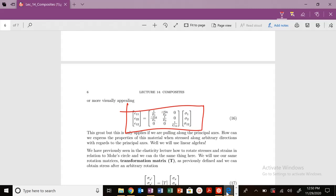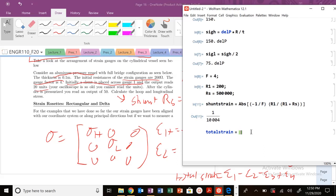So my total strain here is going to be equal to this ratio: 50 divided by 20 times my shunt strain.